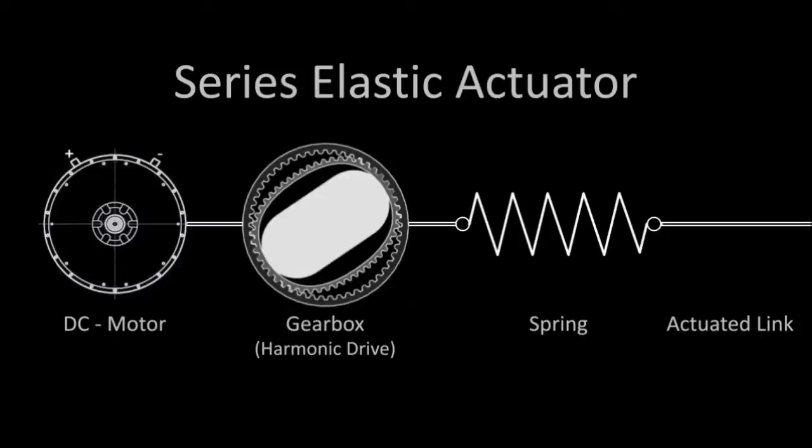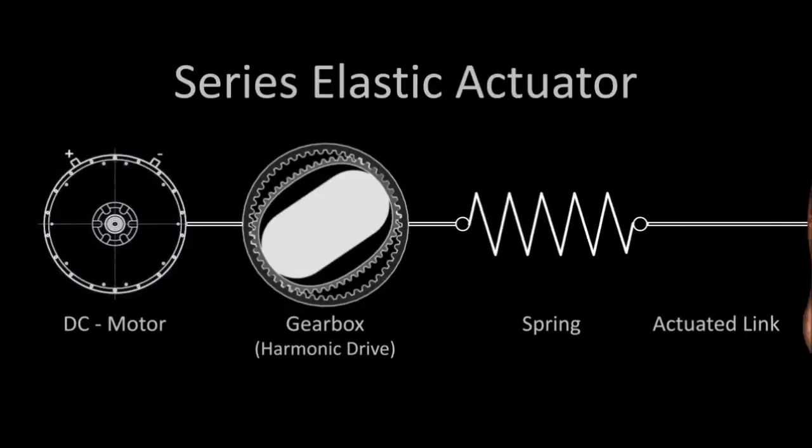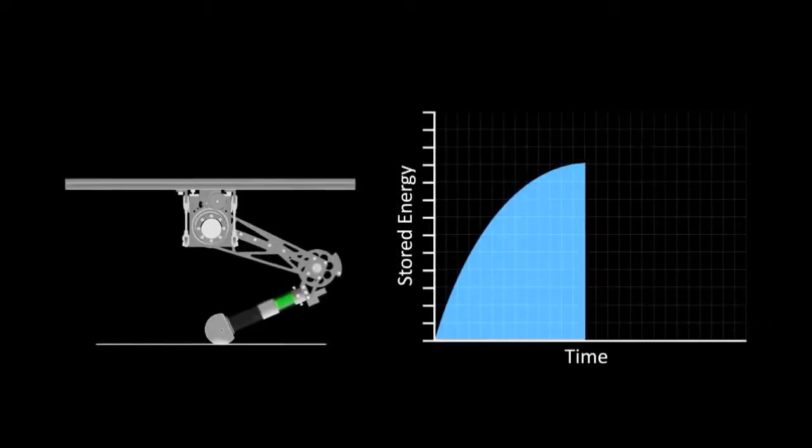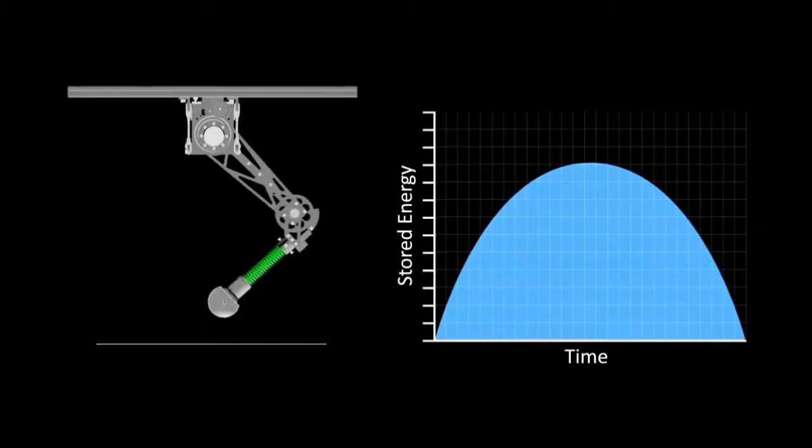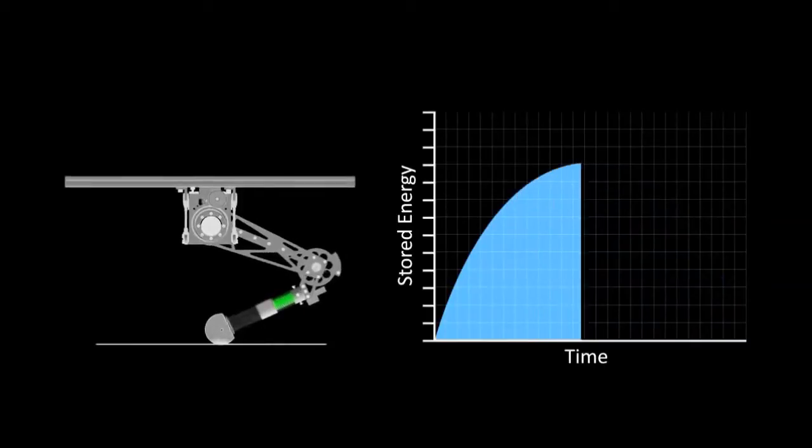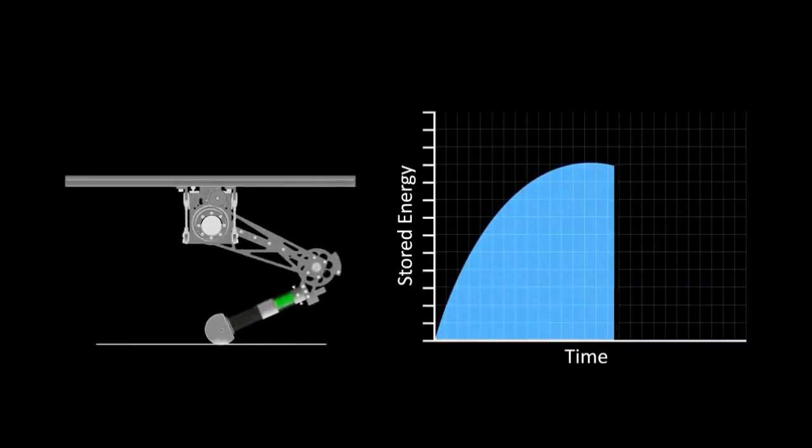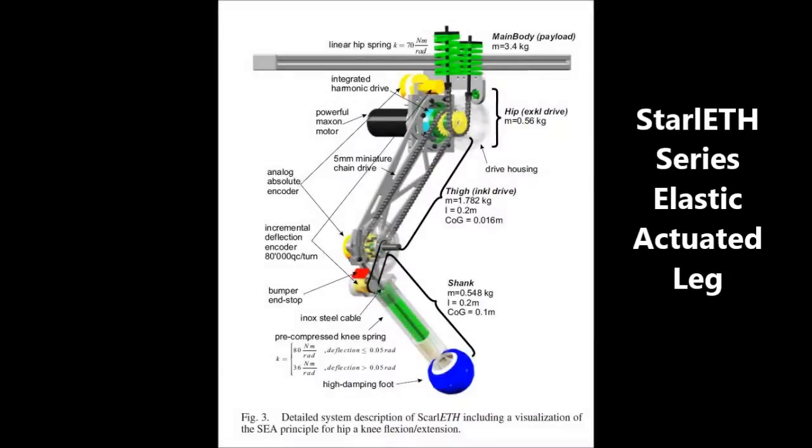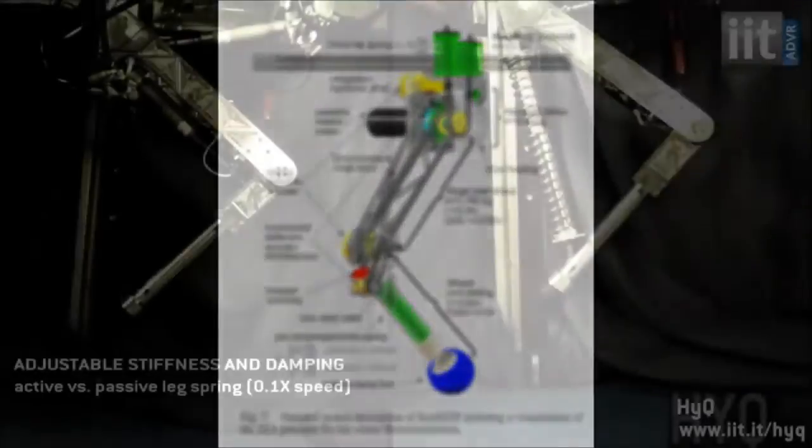This spring also protects the gearbox and motor during use. The spring in the series elastic actuator keeps the system passive and absorbs energy on impact. This energy is then dissipated by the leg before the foot loses contact with the ground. This diagram of the Starleth leg illustrates how the springs help to isolate the electric drive motors from impact and damage.